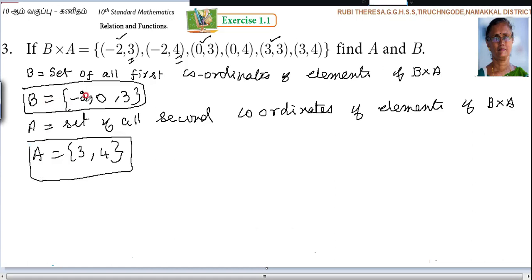So B = {-2, 0, 3}, A = {3, 4}. Do you follow? Since they have given B cross A, the first coordinate belongs to B set. If you want to write it in order, you can write A = {3, 4} first since they asked for A and B. But it is not necessary. Do you follow?